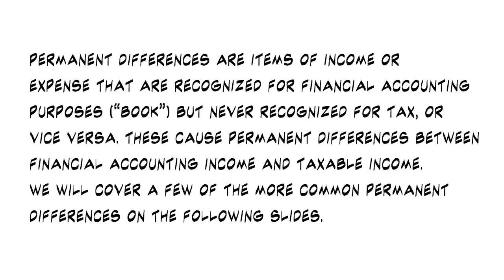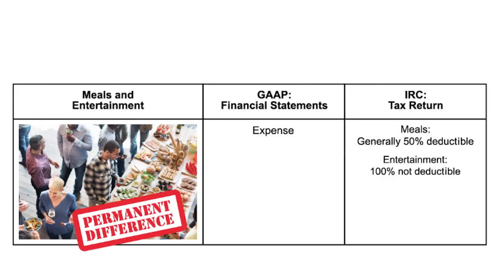The first one we're going to emphasize is meals and specifically entertainment. If it's an entertaining meal or any entertainment, it's an expense for financial purposes. But for your tax return, the meal is 50% deductible and the entertainment is 100% not deductible. You want to remember that — it's one they'd love to throw in and test your knowledge about.